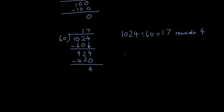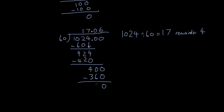Or you can keep going: add a decimal point and a 0. It doesn't fit, so put 0 and add another 0. Now we have 400: 60 times 6 is 360. Subtracting: 0 minus 0 is 0, 10 minus 6 is 4, so 40 is left again. You can see a pattern forming, so the answer is 1024 divided by 60 equals 17.06 recurring.